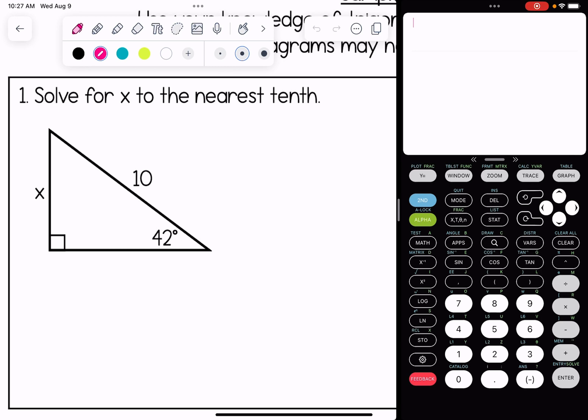The hypotenuse of the right triangle is the side where the 10 is. The opposite side from the 42 degree angle is where the x is, and the adjacent side is the bottom or the base of this triangle.